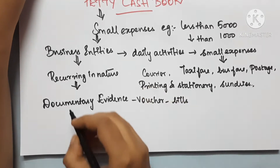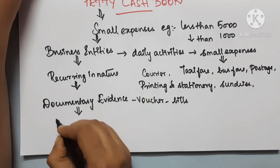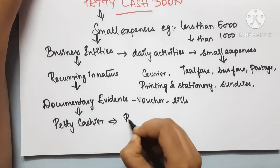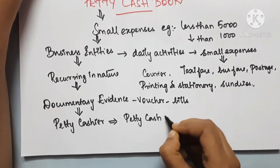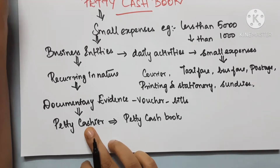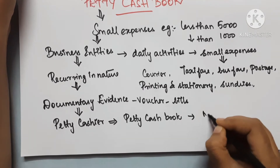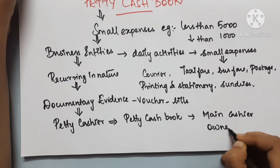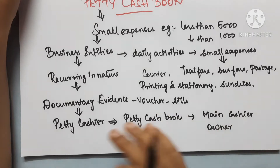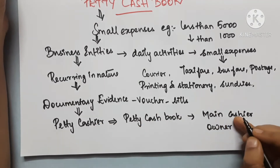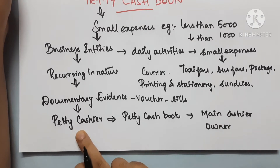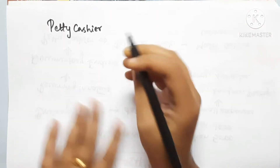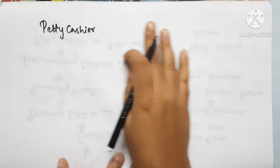Who is looking after the petty cash? The petty cashier. The petty cashier is recording all petty cash books. The petty cash book is maintained by the petty cashier. Most of them are working as a main cashier or as an owner in a small company. The owner is the head, and they divide responsibilities among many cashiers. Now we can see the petty cashier's role - we have to maintain expenses in this petty cashier role.